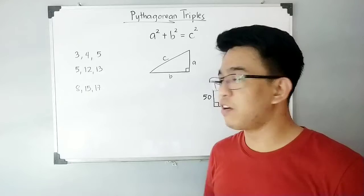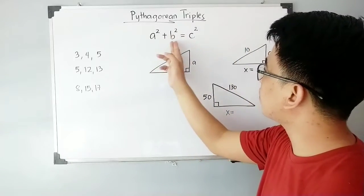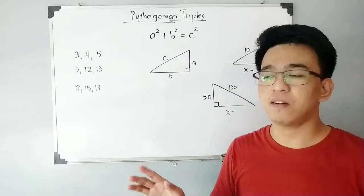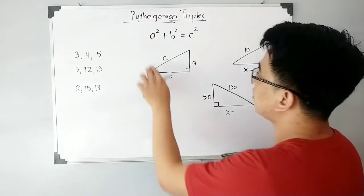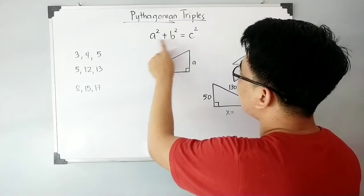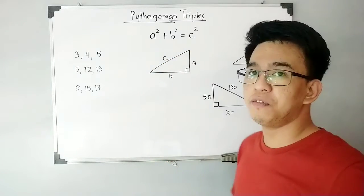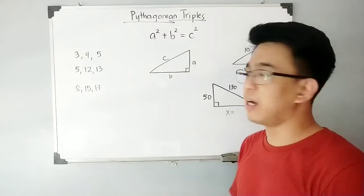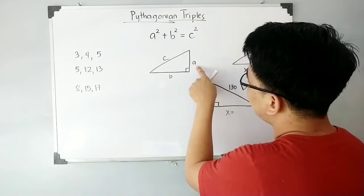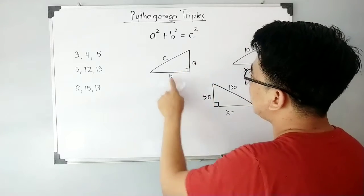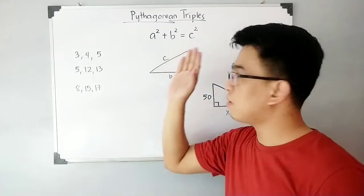Before we start, let us review the Pythagorean theorem. This formula a² + b² = c² embodies the Pythagorean theorem itself. It states that the square of the length of the legs, a² + b², is equal to the square of the hypotenuse, which is the longest side. Imagine that this is your right triangle with side a, side b, and side c.